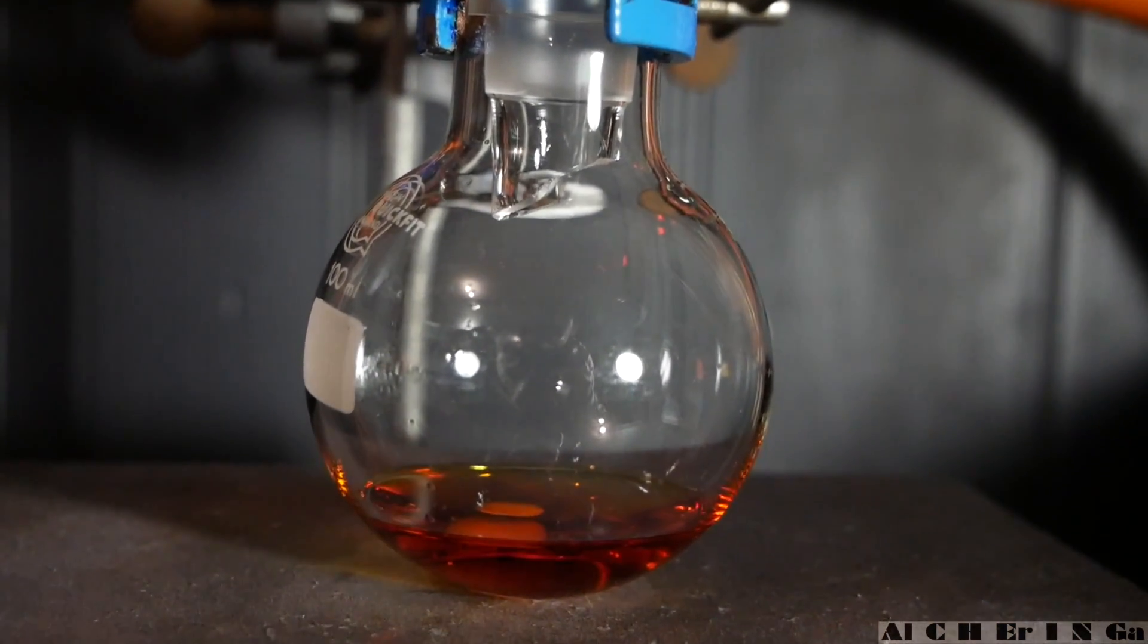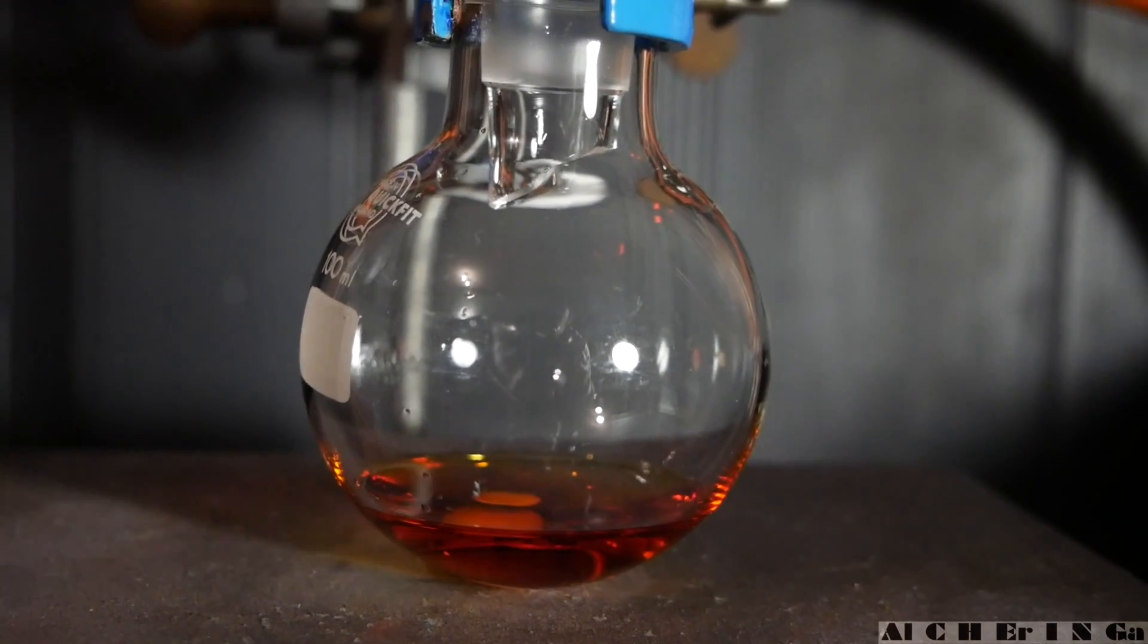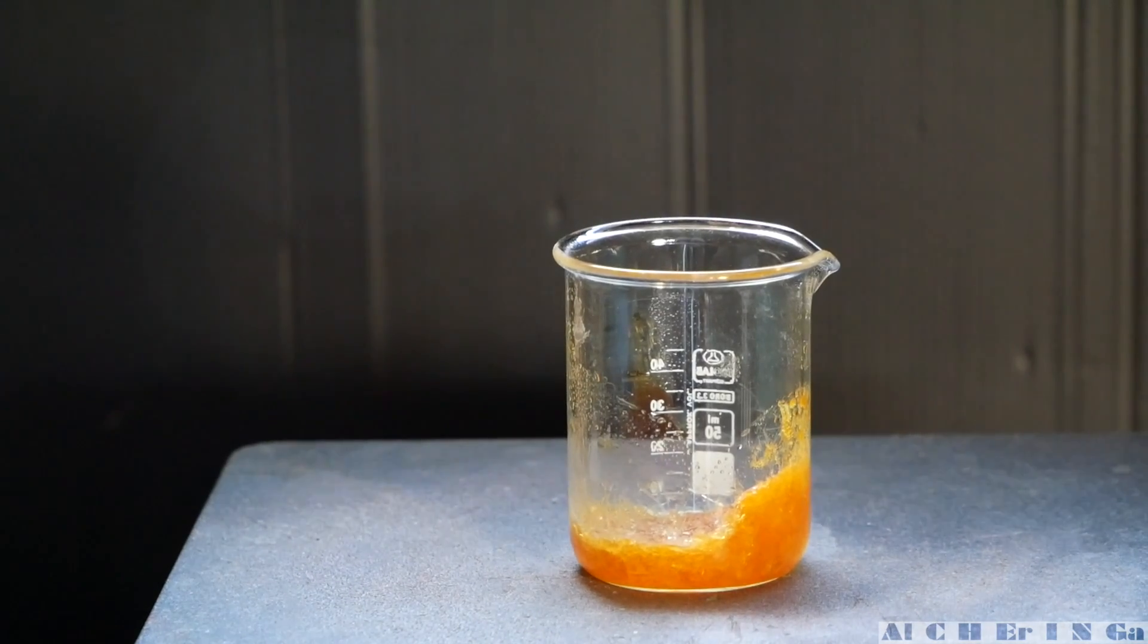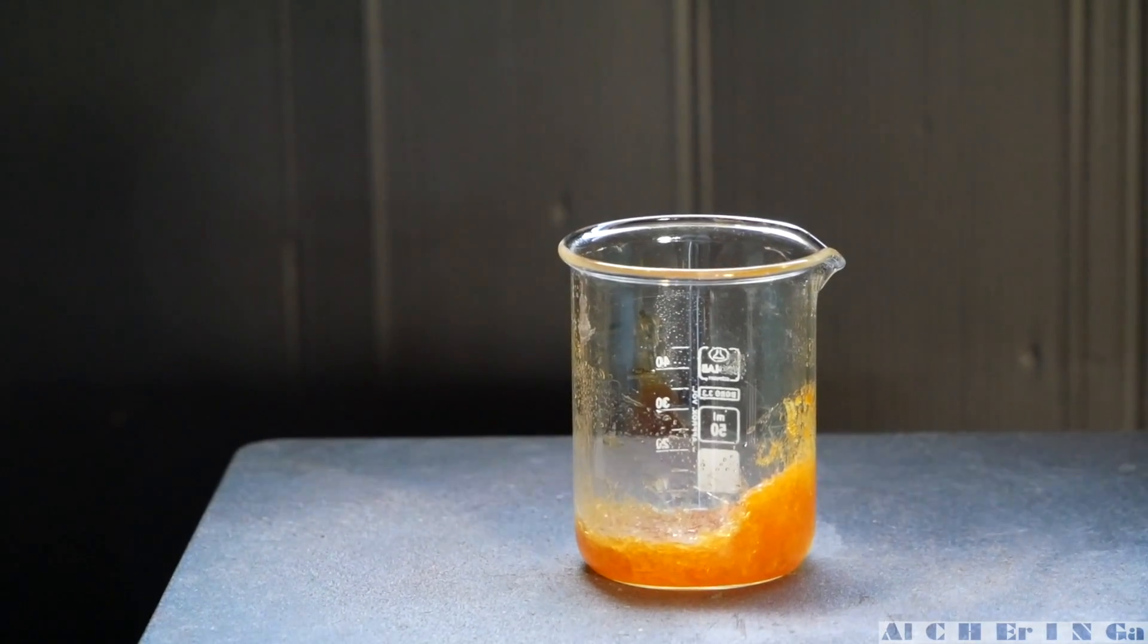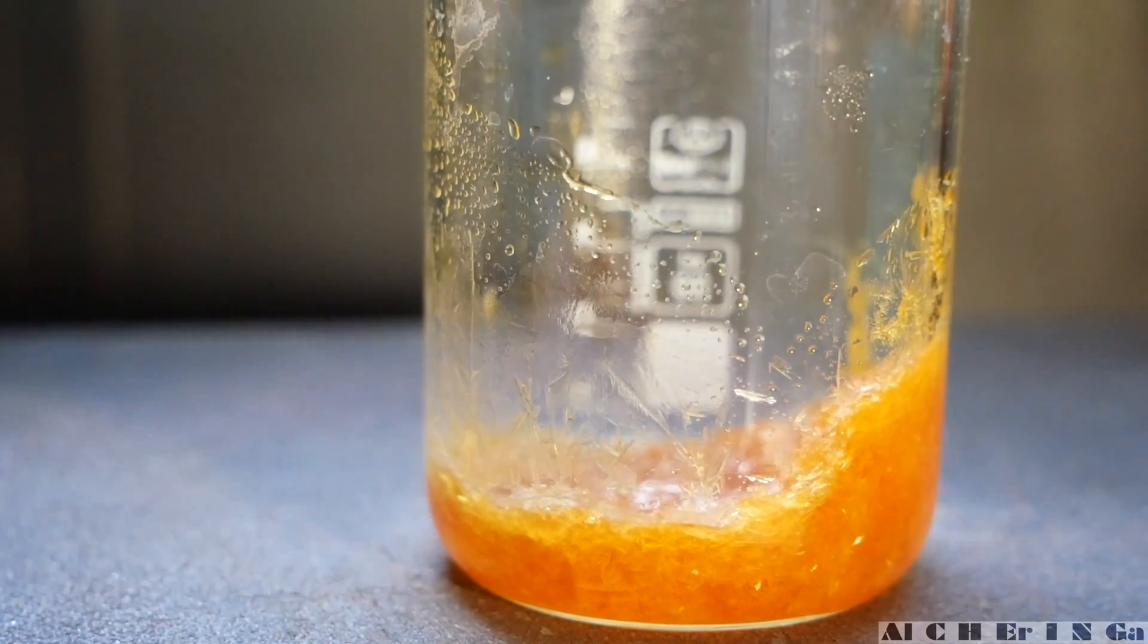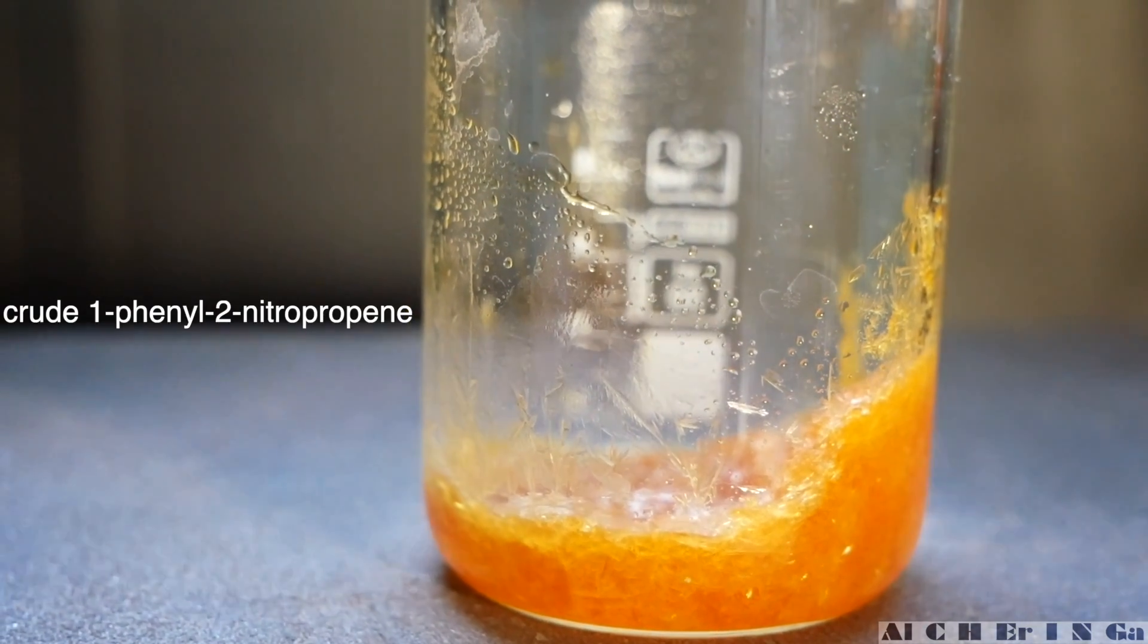Now let the mixture cool to room temperature, turn off the water pump and disassemble the reflux condenser. Then remove the solvent under vacuum or pour the contents into a beaker and evaporate the solvent under low heat. After a while, you will be left with a mass of yellow crystals. This should be crude 1-phenyl-2-nitropropene.